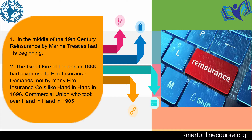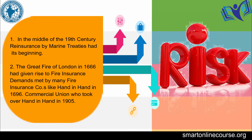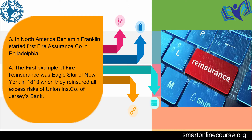The Great Fire of London in 1666 gave rise to fire insurance demands met by many fire insurance companies, like Hand in Hand in 1696, and Commercial Union who took over Hand in Hand in 1905. In North America, Benjamin Franklin started the first fire insurance company in Philadelphia. The first example of reinsurance was the Eagle Star of New York in 1813, when they reinsured all excess or surplus risks of the Union Insurance Company of New Jersey.